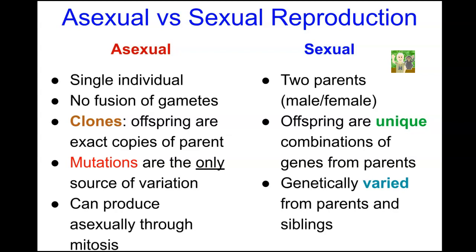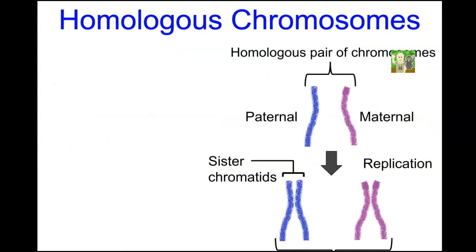That genetic variation is because of meiosis. But before we study meiosis, let's look at homologous chromosomes — specifically the paternal chromosomes we get from our father and the maternal chromosomes from our mother.